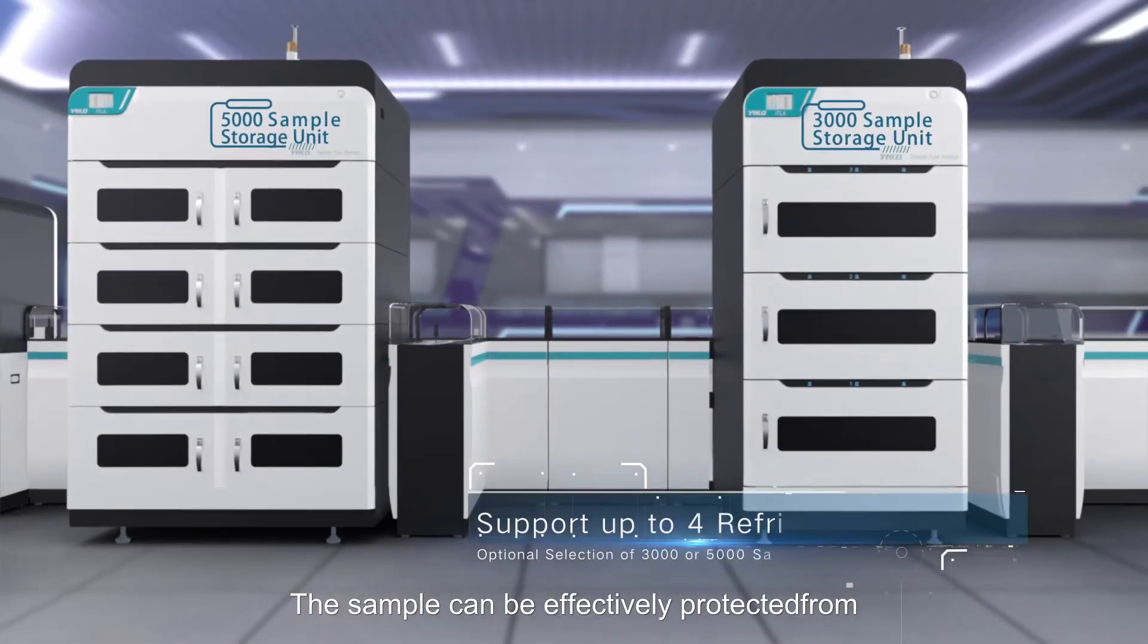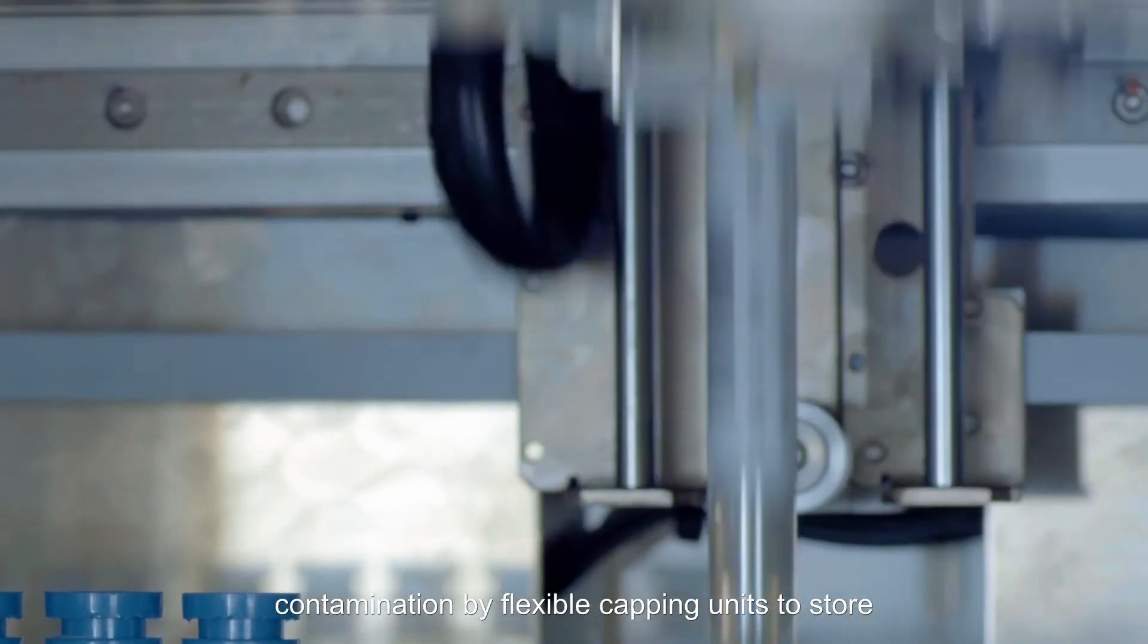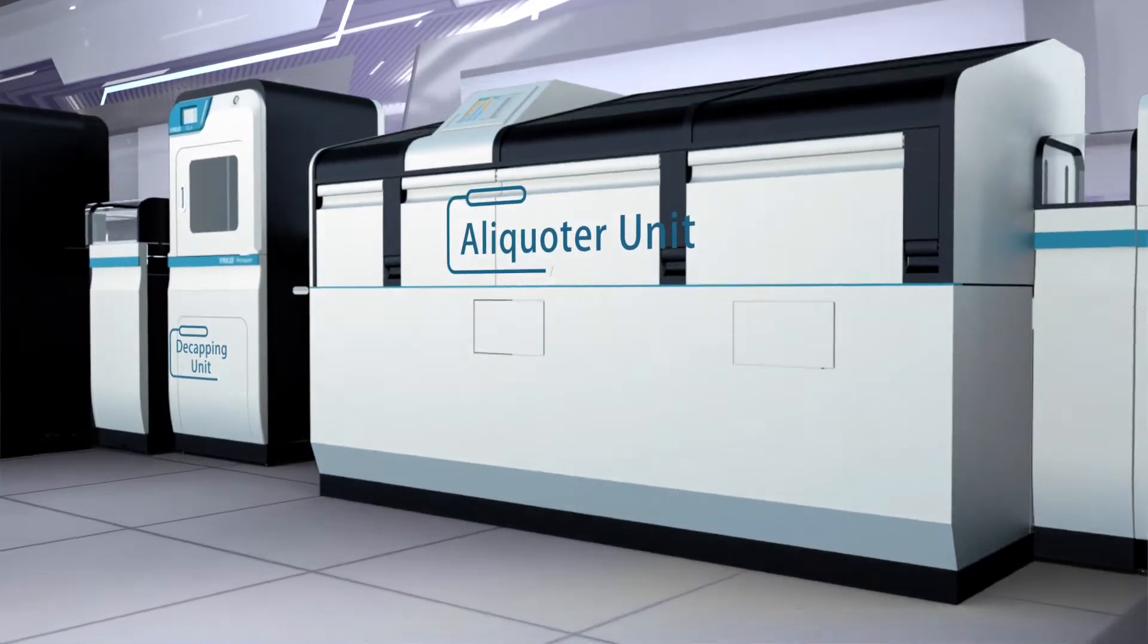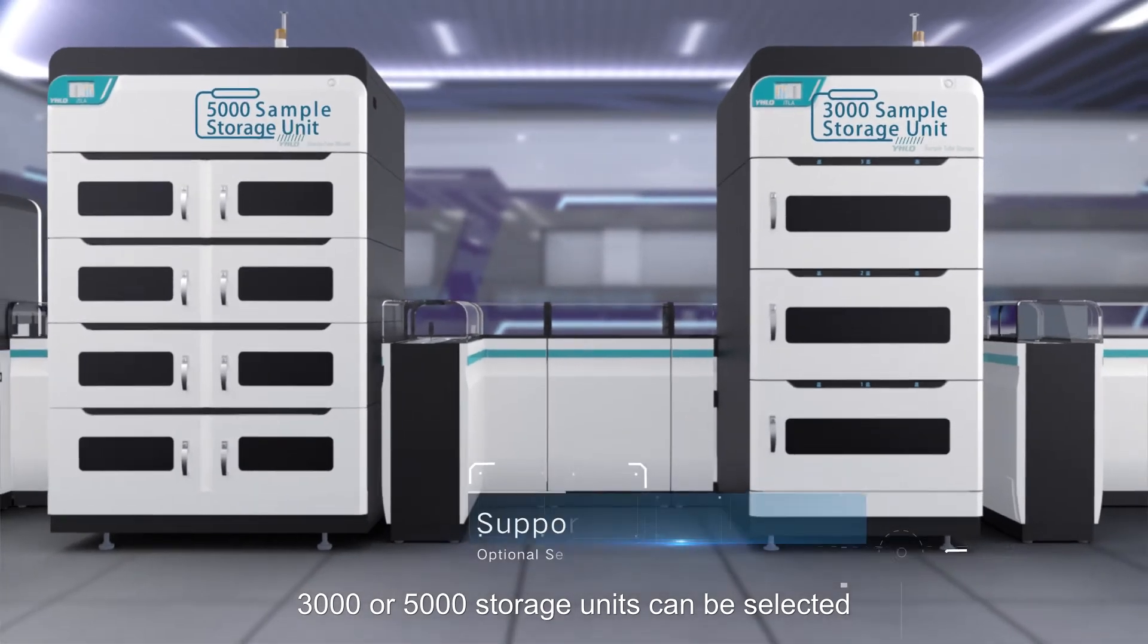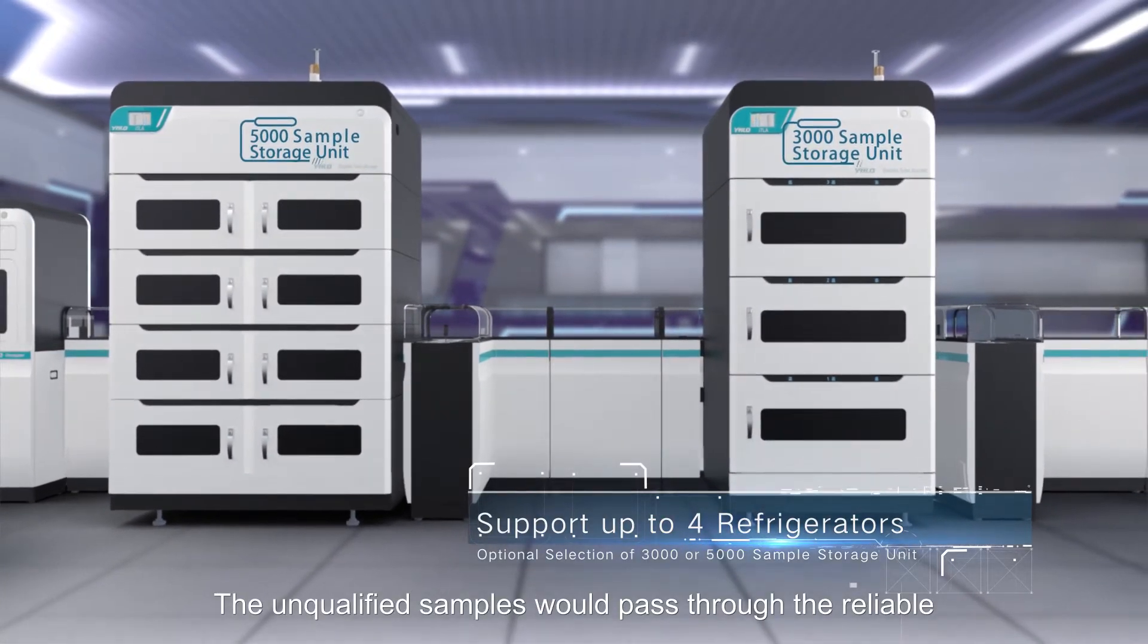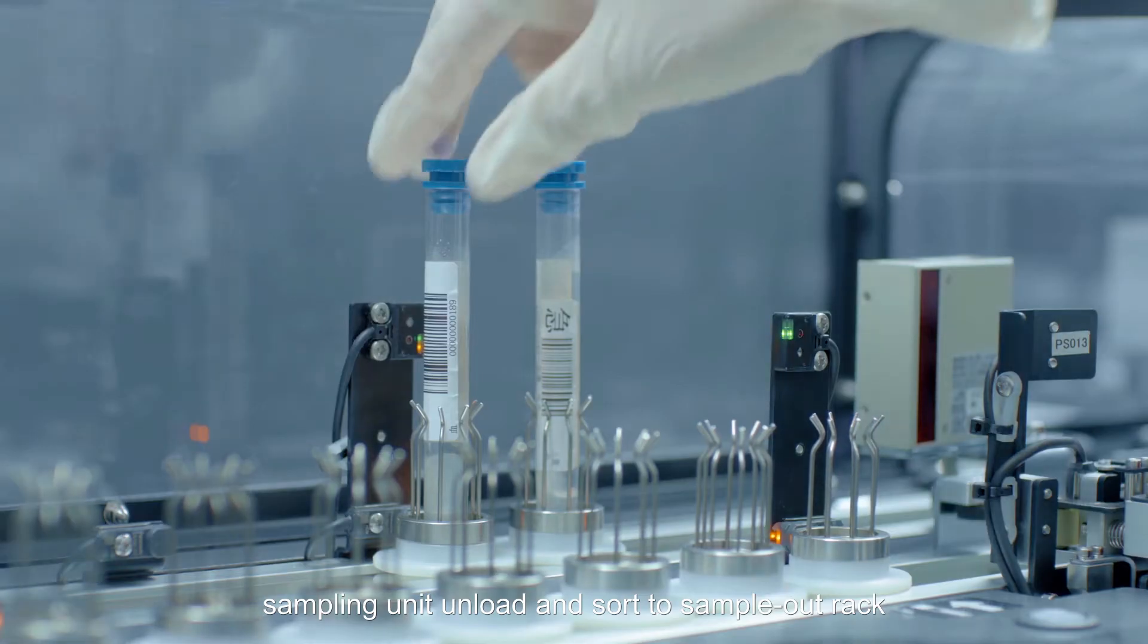The sample can be effectively protected from contamination by flexible capping units to store qualified samples into multifunctional storage units. 3,000 or 5,000 storage units can be selected according to requirements. The unqualified samples would pass through the reliable sampling unit, unload and sort to sample out rack.